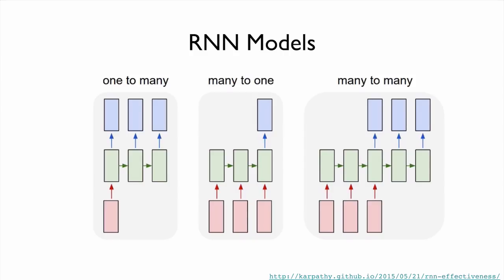We can combine RNN in different ways to have many different models. For example, we can feed one input and then the RNN produces multiple outputs. For instance, we provide one image and ask the network to caption it. Each output here is a word, so that we can understand what is in the image.